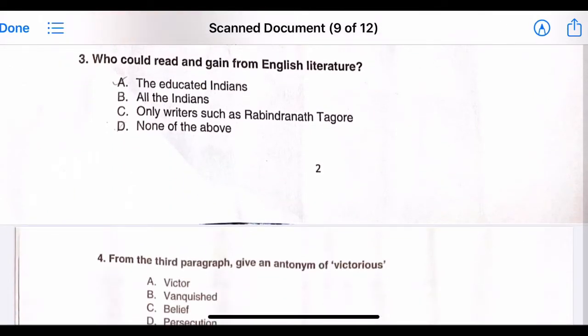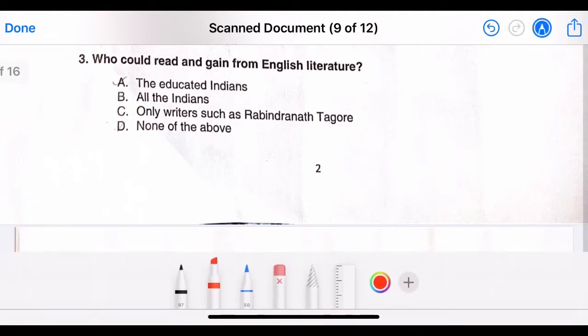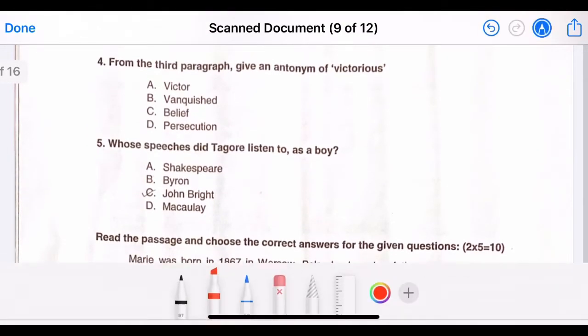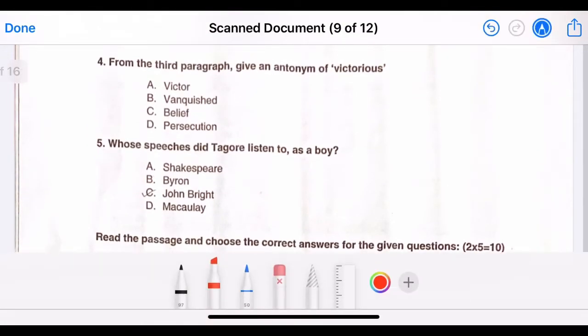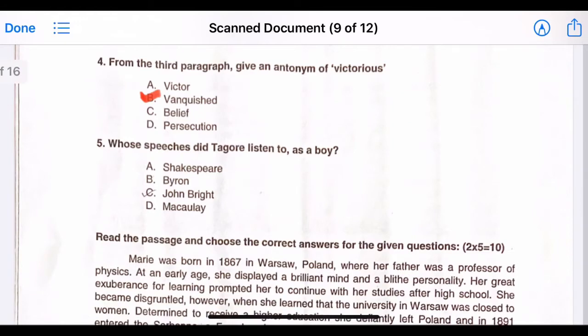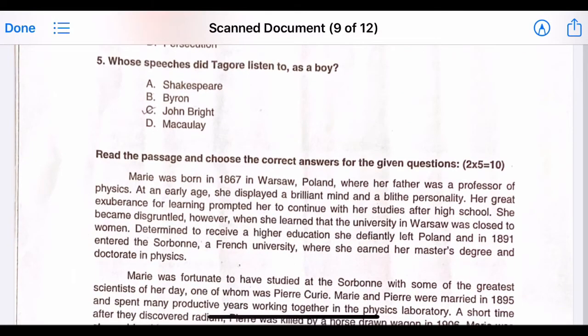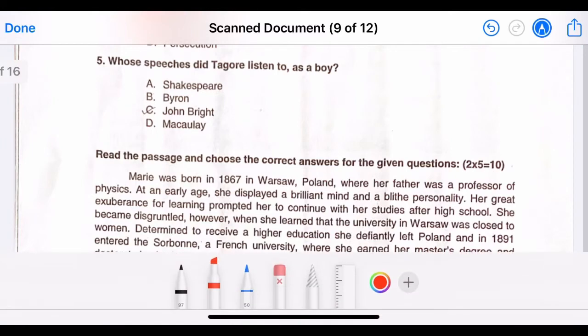Three, who could read and gain from English literature? The correct answer is option A, the educated Indians. Question four, from the third paragraph give an antonym of victorious. The correct answer is option B, vanquished. Five, whose speeches did Tagore listen to as a boy? The correct answer is option C, John Bright.